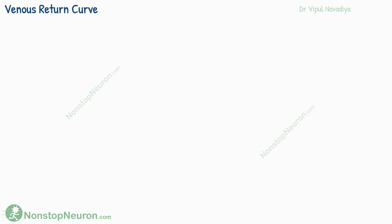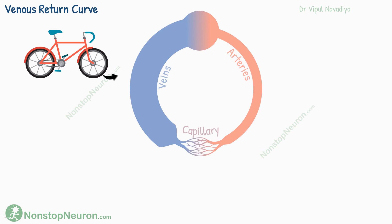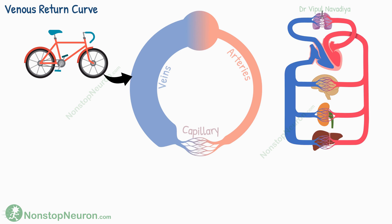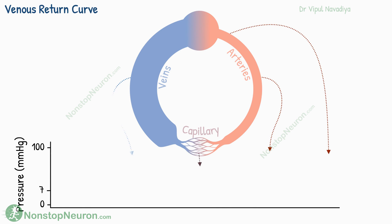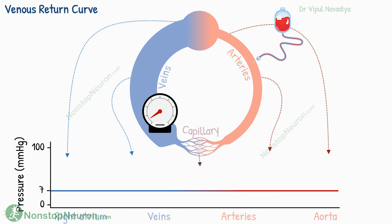Now let's talk about the venous return curve. To study it, we will use a simplified model of circulation. Think of it as a tube of a cycle tire, the shape of which is modified to represent the circulation. This graph shows the pressure in different parts of the circuit. In the beginning, when it is empty, the pressure inside is 0. Now we fill it with blood, which generates some pressure.